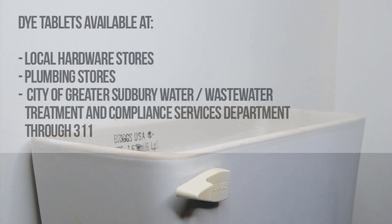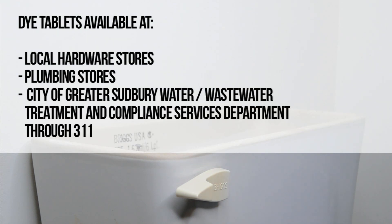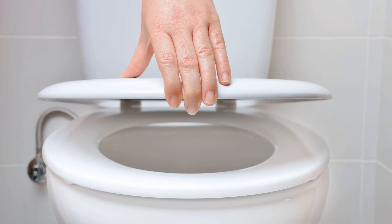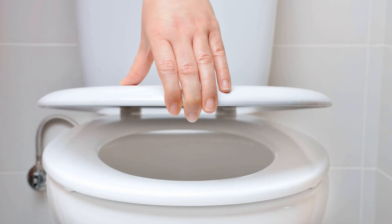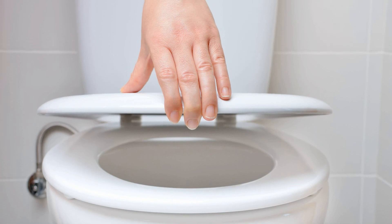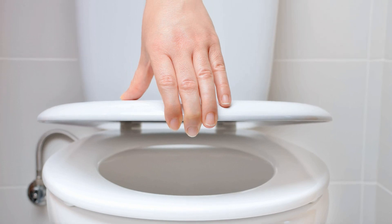Once the dye is in your toilet tank, wait 15 minutes without using the toilet, then check the toilet bowl for the entrance of dye coloring. If there is no dye color in the bowl, you do not have a leaky toilet tank and your water leak must be somewhere else in your home.